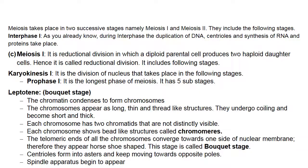The haploid male gametes (sperms) fertilize with the haploid female gamete (ovum) to produce a diploid zygote, which develops into an individual with a diploid number of chromosomes in each cell, thus maintaining the constant chromosome number for a species. Meiosis takes place in two successive stages: meiosis I and meiosis II. During interphase I, duplication of DNA, centrioles, and synthesis of RNA and protein takes place. Meiosis I is the reductional division in which a diploid parental cell produces two haploid daughter cells. Prophase I is the longest phase of meiosis and has five sub-stages.